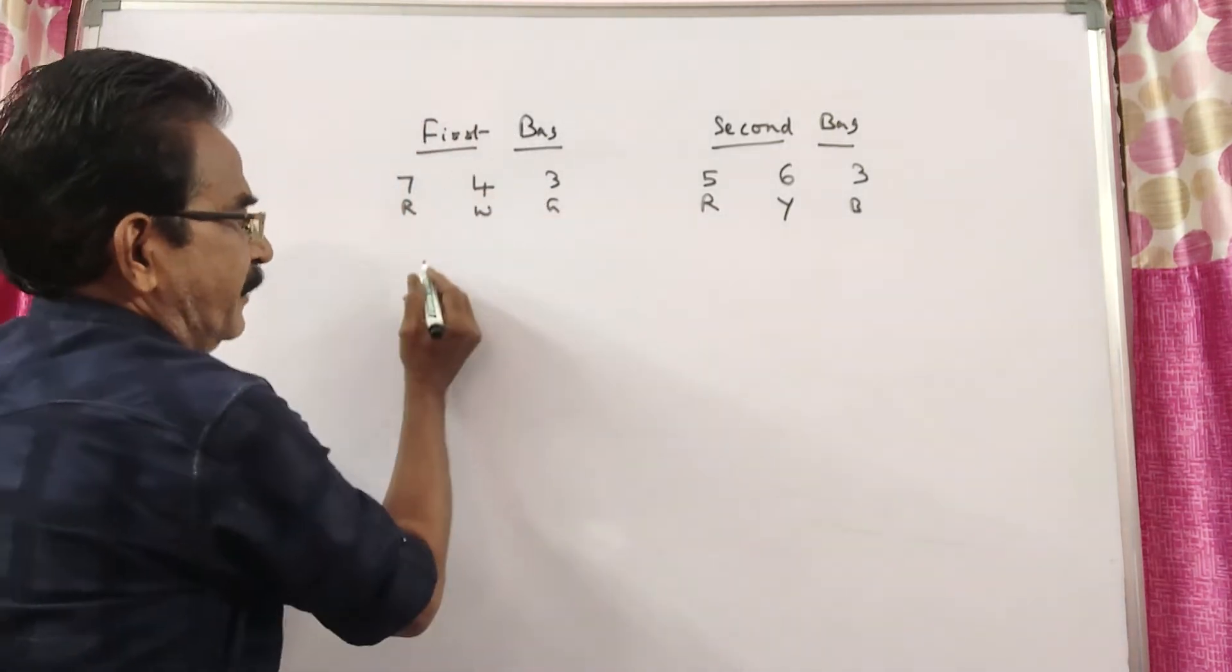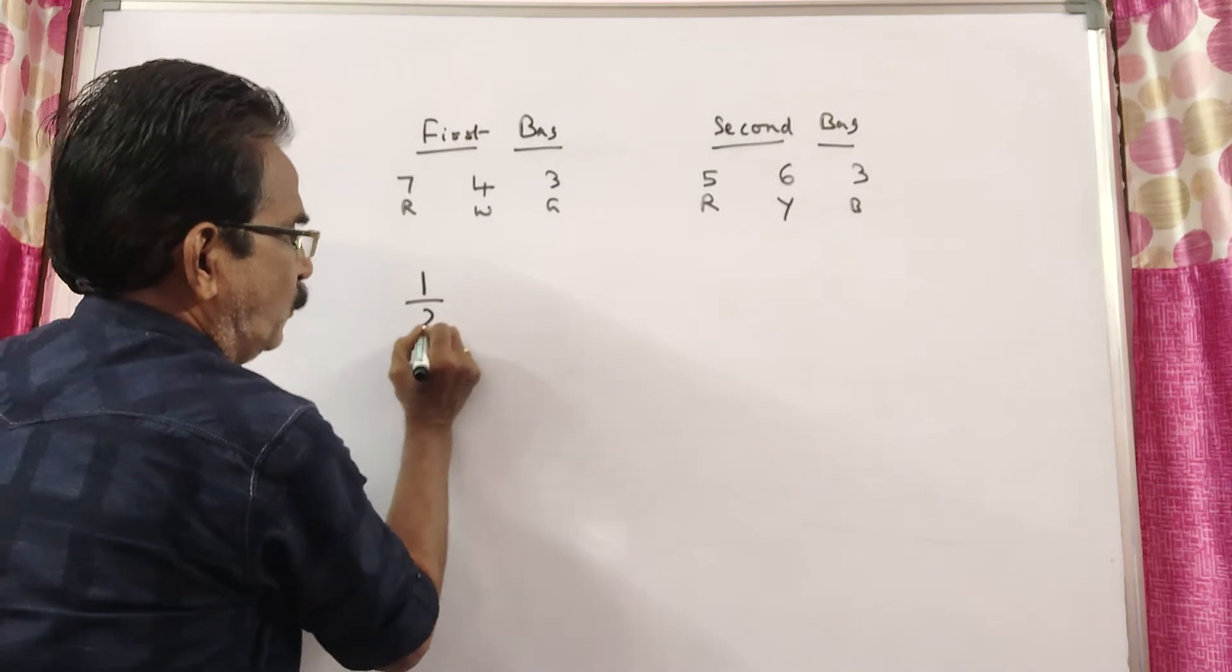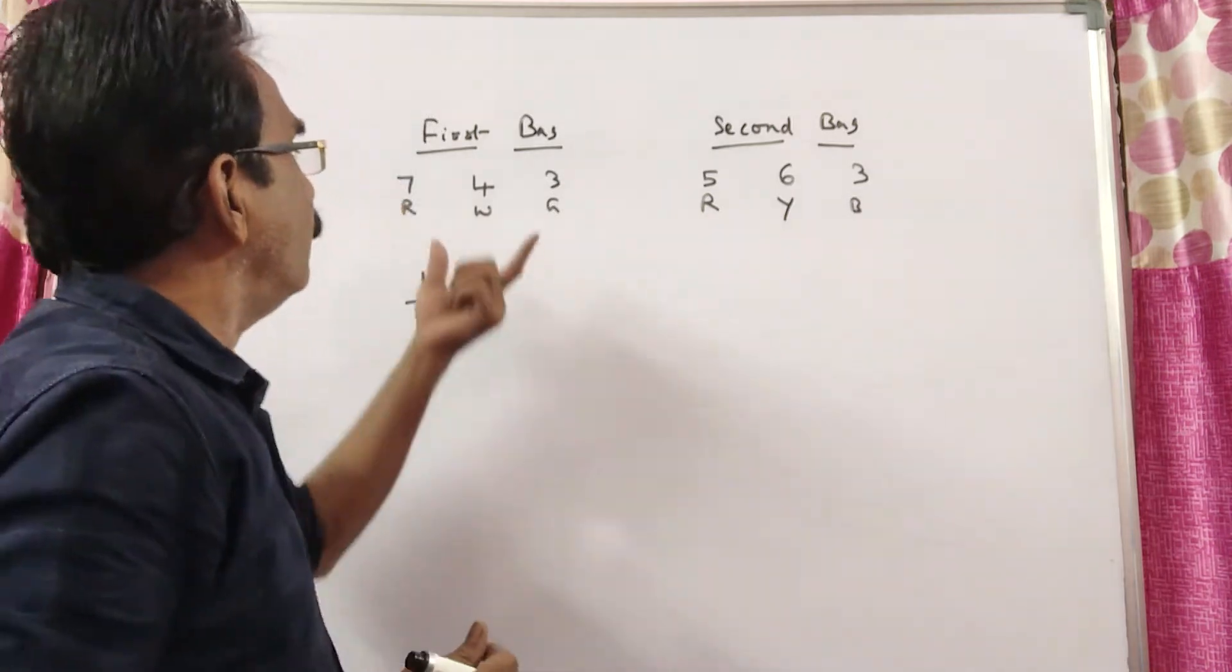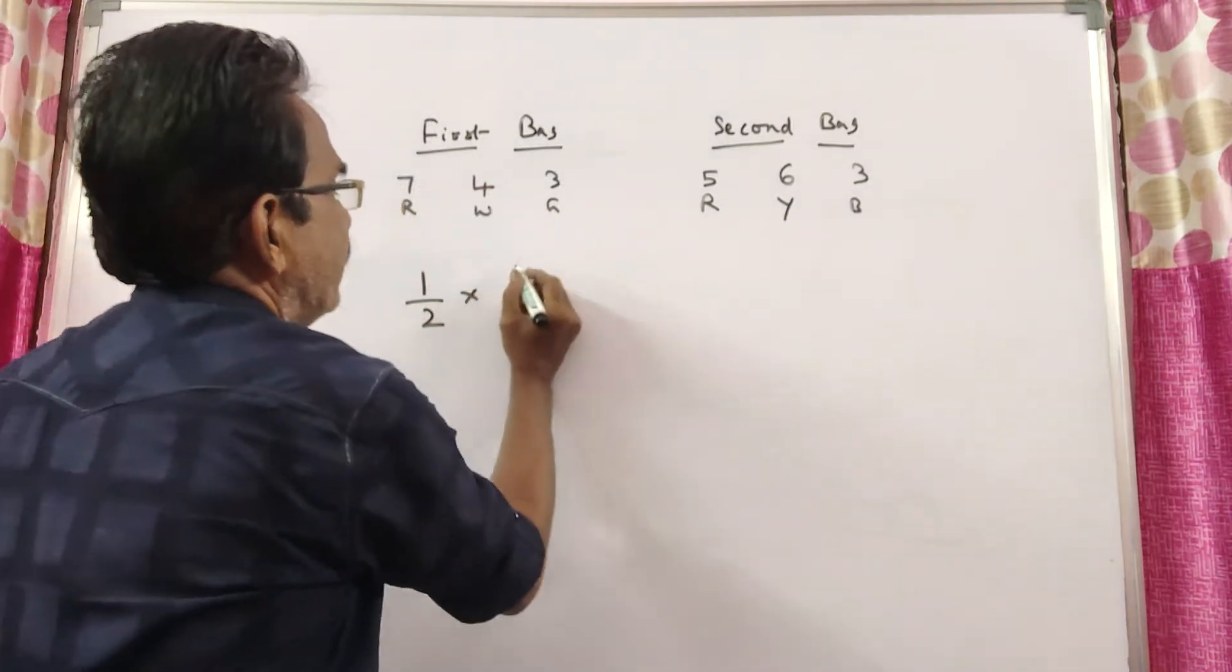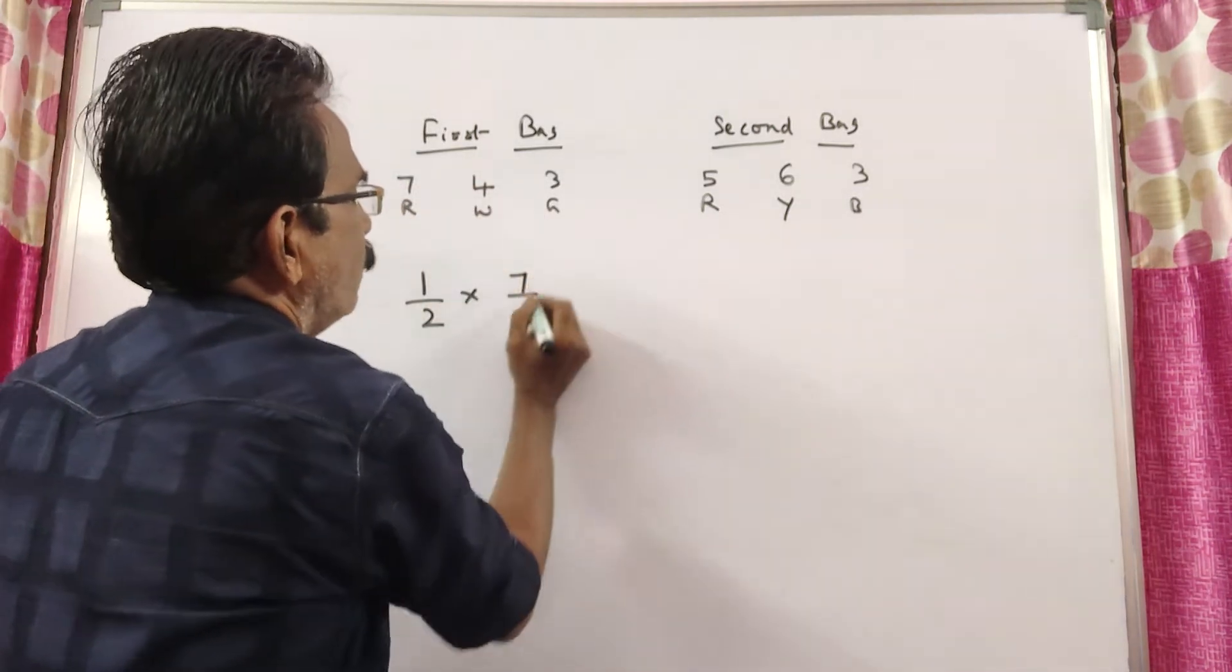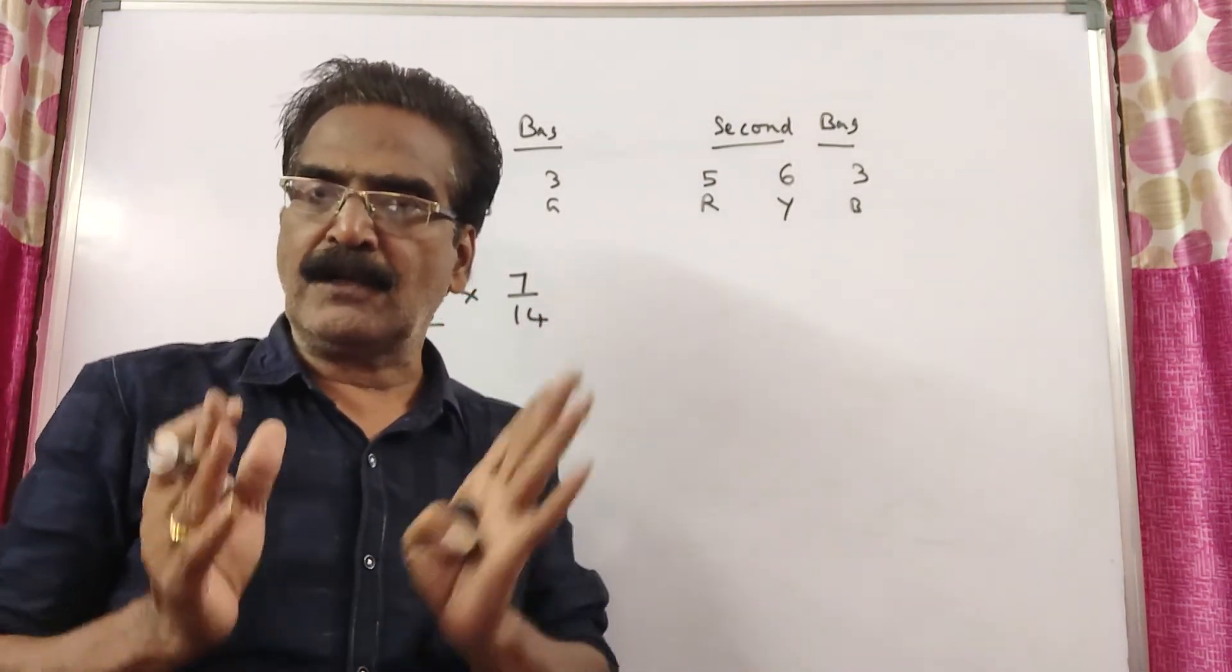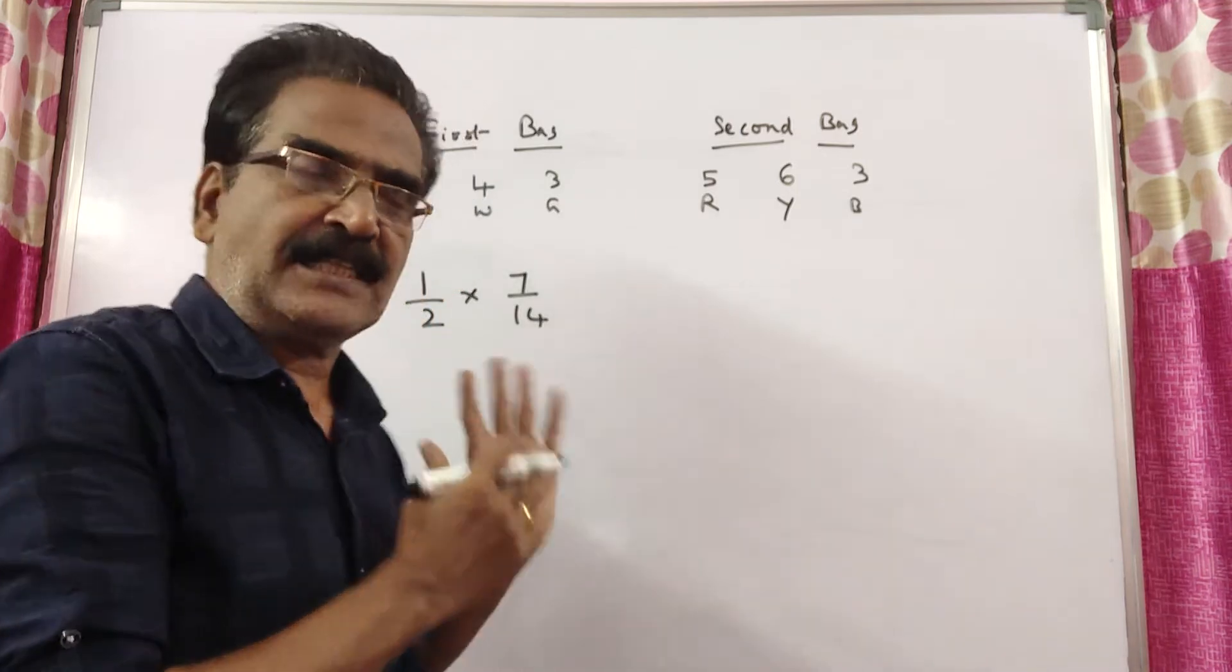See, the probability of selecting the first bag is 1 by 2, into what is the probability of drawing a red ball from this bag? 7 red balls are there. Total, we have 14 balls. This is the probability of drawing a red ball from the first bag.